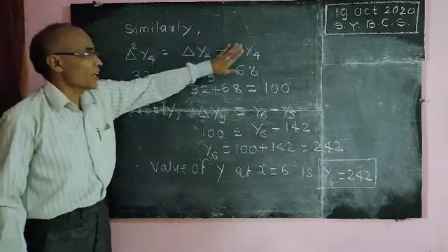Now, similarly, delta square y4 is equal to delta y5 minus delta y4. Similarly, lastly, delta y5 is equal to y6 minus y5.